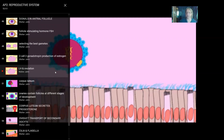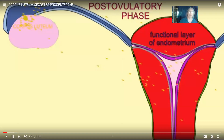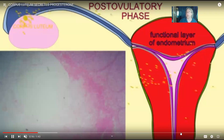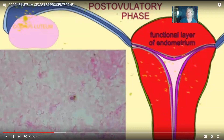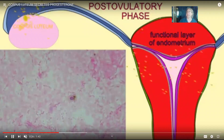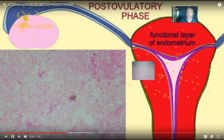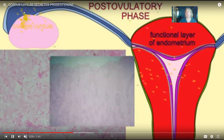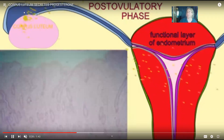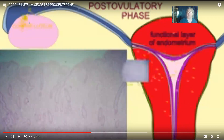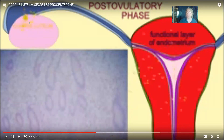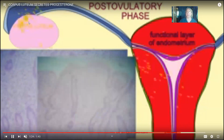Some of the cells of the follicle become the corpus luteum, which produces the hormone progesterone. Progesterone causes the functional layer of the endometrium — the lining of the uterus — to reach its thickest point. It is thus the ideal place for implantation if conception occurs. This very thick uterine lining is induced under the influence of progesterone, with endometrial glands making glycogen and becoming blood-rich tissue ideal for implantation.